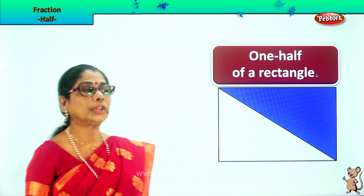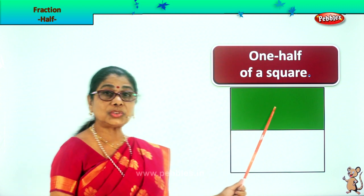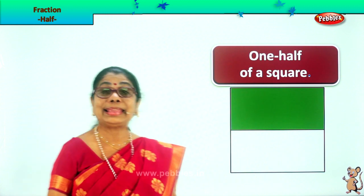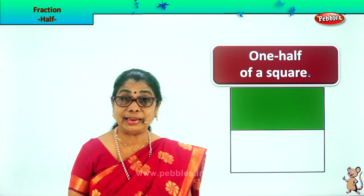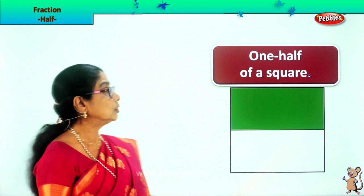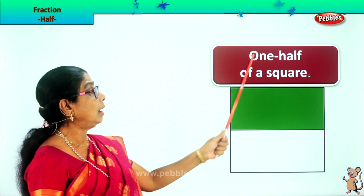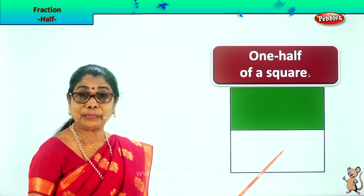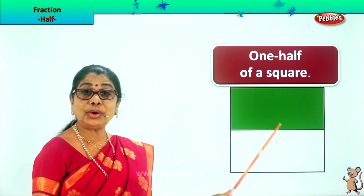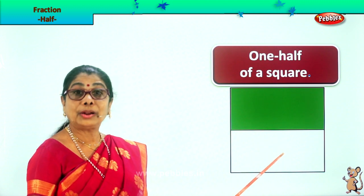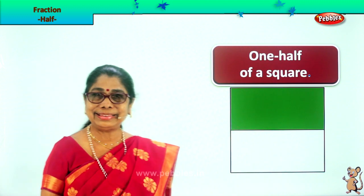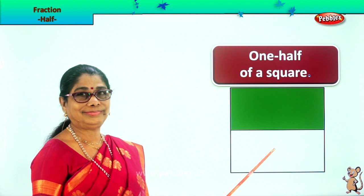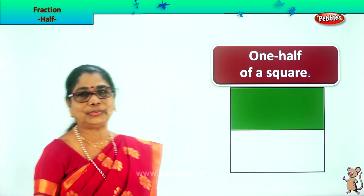Let's take another shape. Here we have a square. The big whole square can be equally divided into two parts. This is called one half of a square, and this is also one half of a square. This is one by two, or one half. This is also one half of a square.